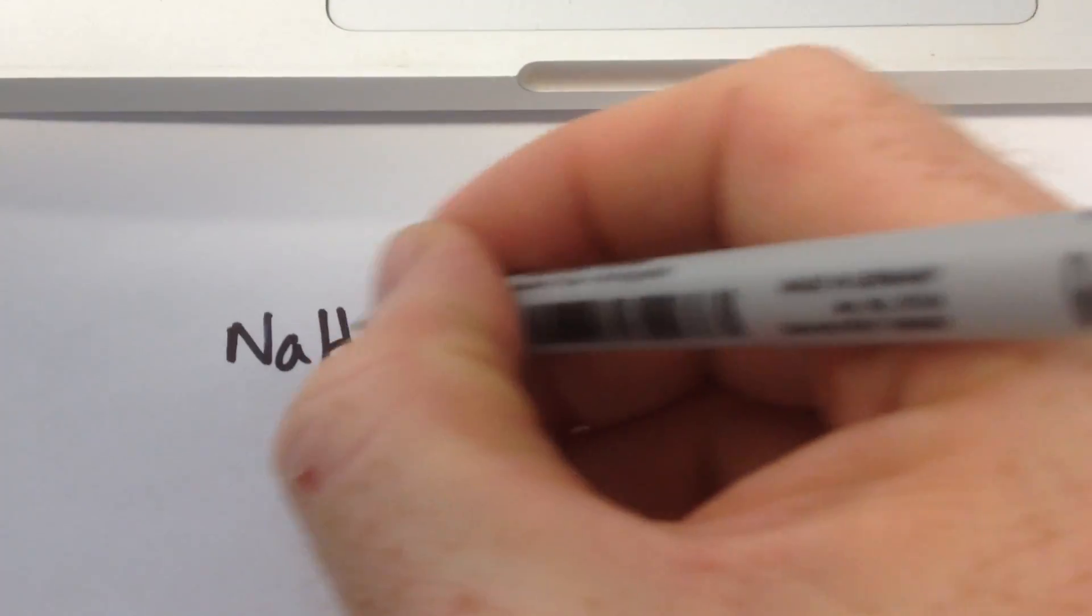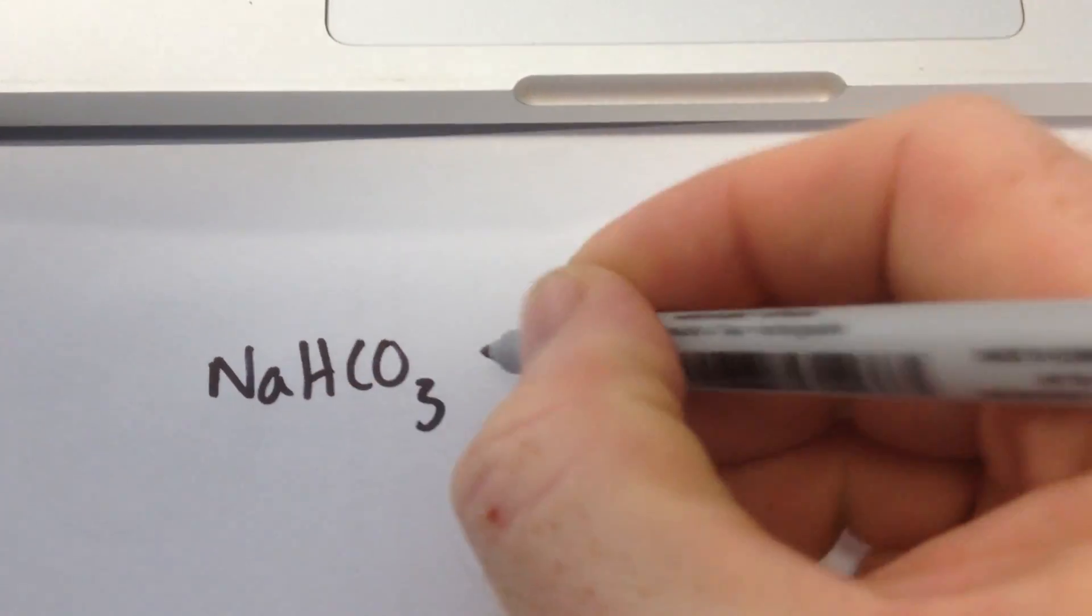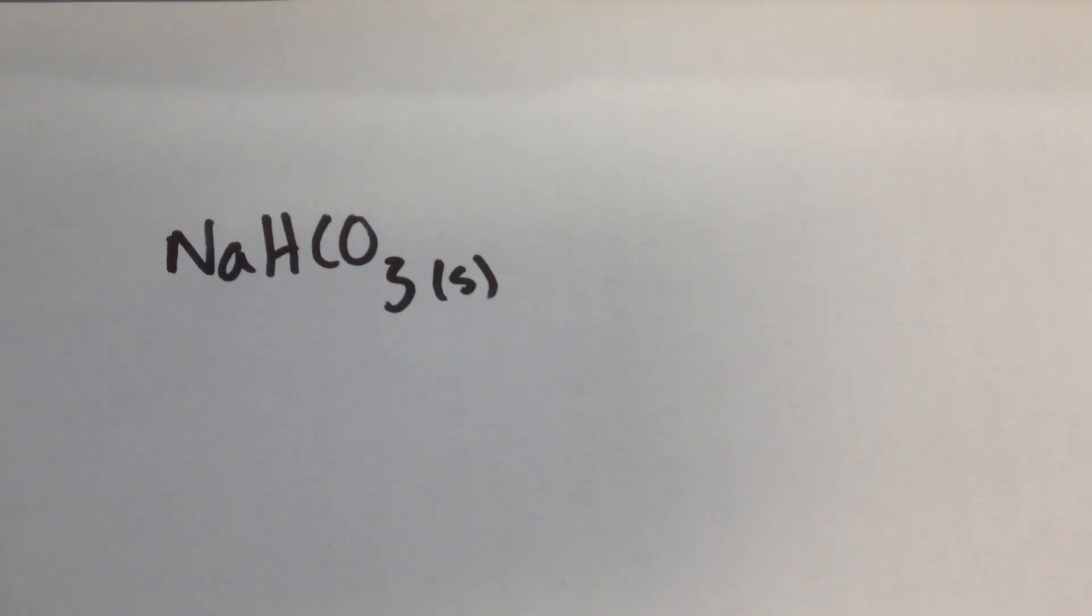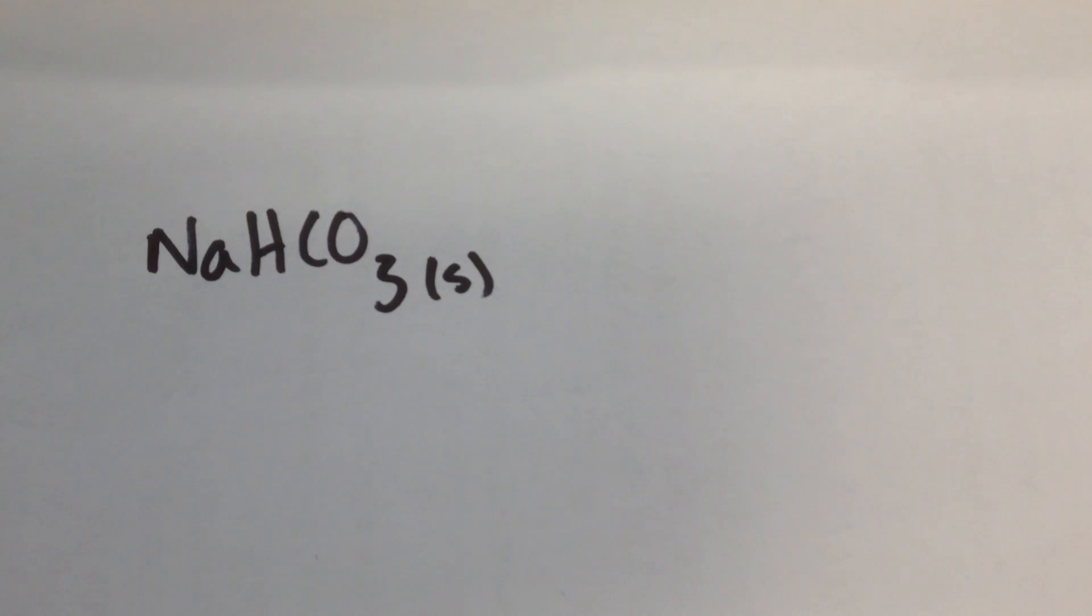Here's the salt, sodium hydrogen carbonate. We'll write it as a solid salt at this point, but normally you would get it as a solution with this salt already dissolved.